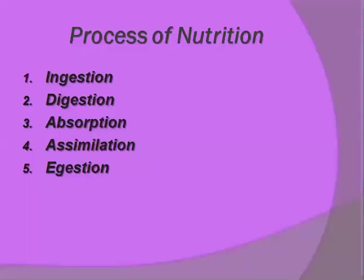Hello students. In the previous session I started a new chapter on nutrition in animals. As you know, animals show heterotrophic mode of nutrition. In that class I told you about nutrition — what it is. Nutrition is a process of taking in food, its digestion, absorption, and then utilization of the nutrients in the body. The whole process is known as nutrition, and it is a combination of five different steps.